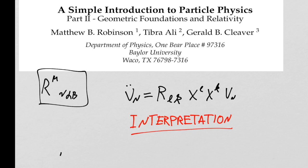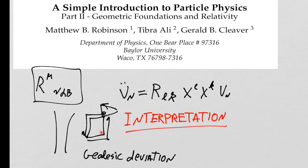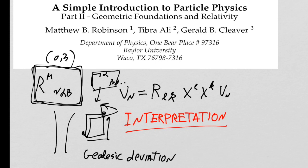We studied the Riemann tensor and talked about it in terms of separating geodesics — that was the geodesic interpretation method. We also derived it in terms of parallel transport of a vector around a little square. We had a vector, parallel transported it two ways, and got a difference, showing it as a tensor machine that tells us about the acceleration between two nearby geodesics.